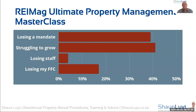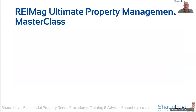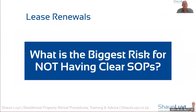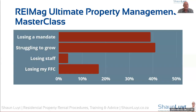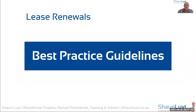The last poll question I'll touch on: what is the biggest risk for not having clear standard operation procedures? The most important risk that came out of the group was struggling to grow, and losing a mandate. Mandates give us money, and vacant properties don't give us money, so we need to get them filled as well. That's just some background to today's presentation.